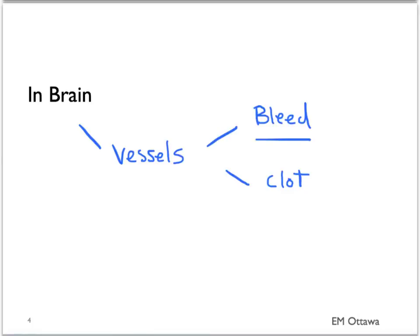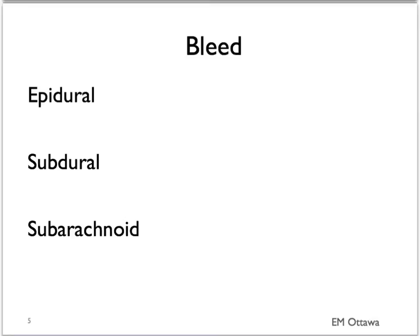Let's first talk about the diagnoses that are in the brain, focusing on the blood vessels and bleeding diagnoses. For all bleeding diagnoses — which includes epidural, subdural, and subarachnoid bleed — we need to know whether the patient is more prone to bleeding, whether they have a hereditary bleeding disorder such as hemophilia, or whether they are on anticoagulants.